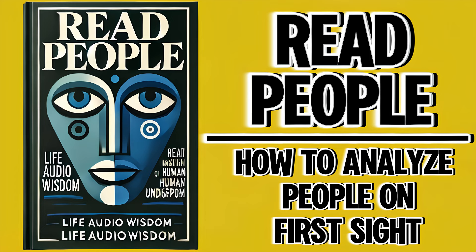Tip: note variations in vocal pitch and speed — sudden changes can indicate shifts in emotional states, giving you cues on how to steer the conversation. Word choice and language patterns: the specific words and phrases people choose can reveal their education level, cultural background, and personality traits. Someone who uses complex vocabulary may be well-read, while simple and direct language might indicate a straightforward, honest personality.